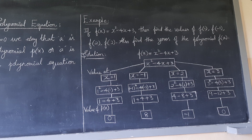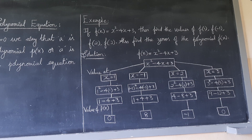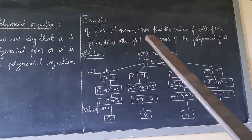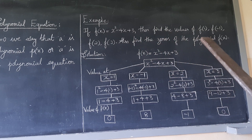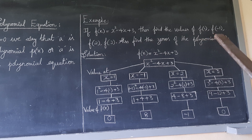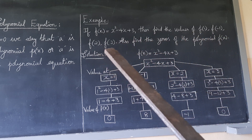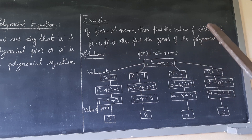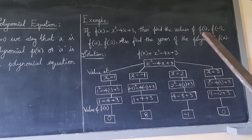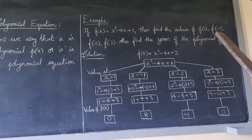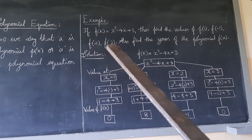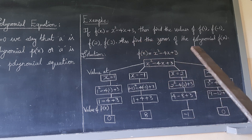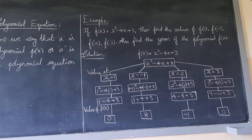Let's see an example. f(x) is equal to x squared minus 4x plus 3. Find the values of f(1), f(-1), f(2), and f(3). For f(1), we substitute 1 in place of x, and similarly substitute -1, 2, and 3. Also find the zeros of the polynomial f(x).